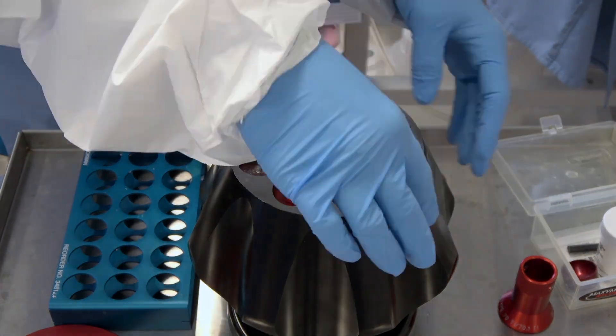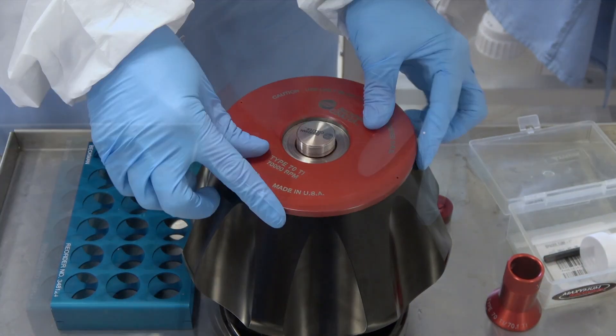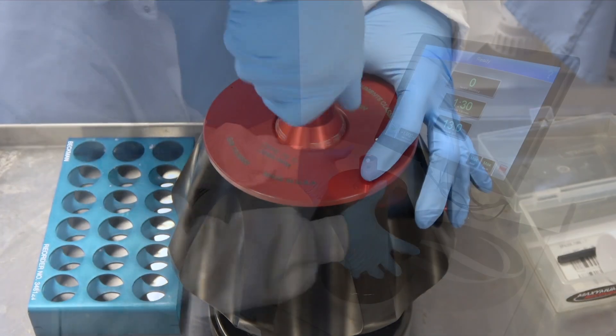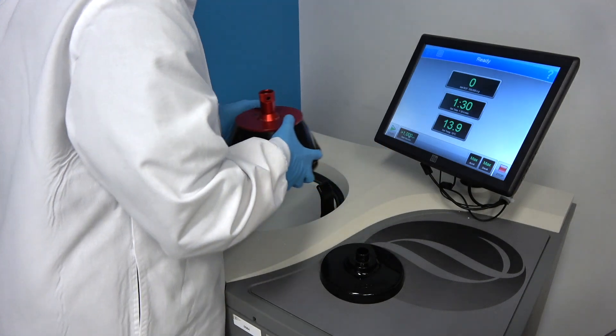When loading the rotor, check that the lid is adequately greased. Now that the column is prepared, spin at 350,000 Gs for 90 minutes.